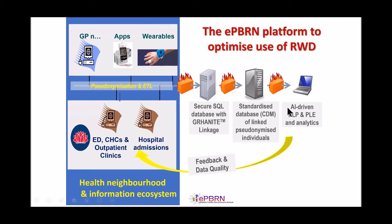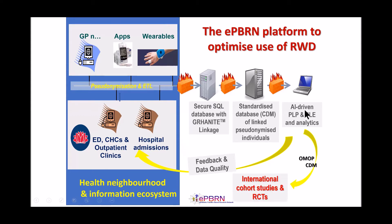The standardized database — after data linkage, cleaning, and harmonization to a common data model — is used for research. We use both machine learning and traditional biostatistics for patient-level prediction, population-level estimation studies, analytics, and characterization of different cohorts. This data is accessible to accredited and approved users. An important focus is feeding summarized data quality results back to GPs and facilities who contributed the data, creating a quality assurance and improvement cycle. Through the OMOP common data model — the Observational Medical Outcomes Partnership — we can also participate in international cohort studies and clinical trials.